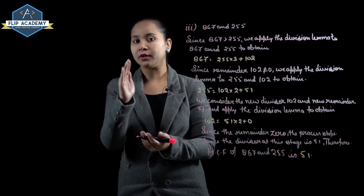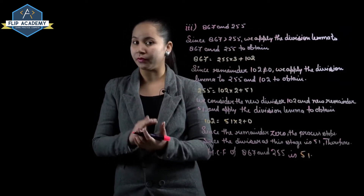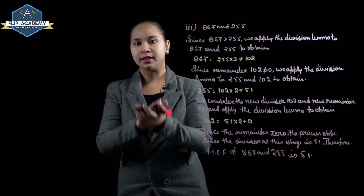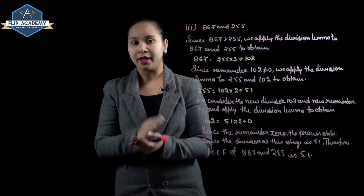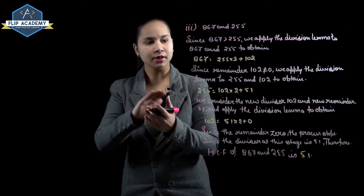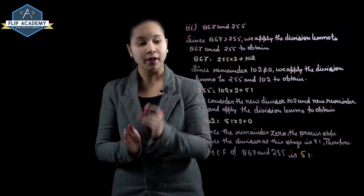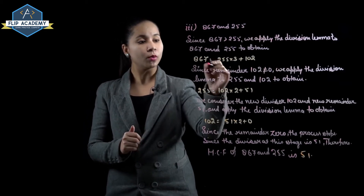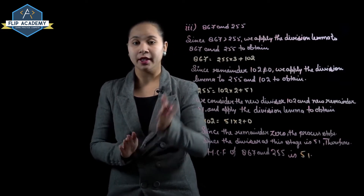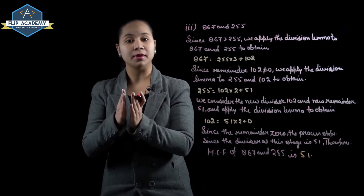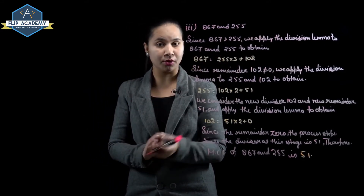Third part: HCF of 867 and 255. Since 867 is greater than 255, we apply the division lemma to 867 and 255. So 867 = 255 × 3 + 102. Here 867 is the dividend, 255 is the divisor, 3 is the quotient, and 102 is the remainder. We continue this process until the remainder equals 0.